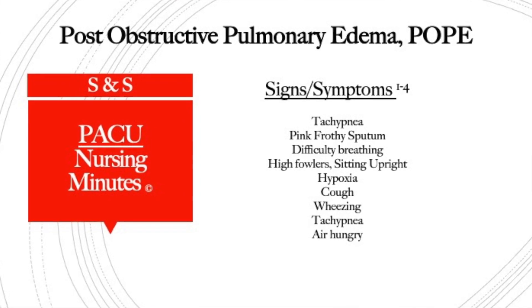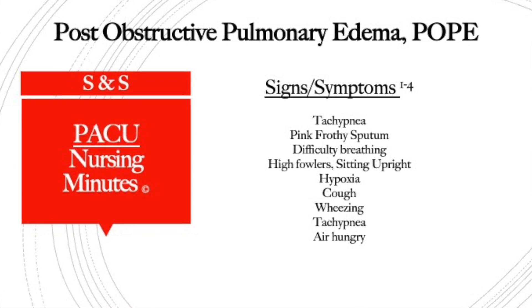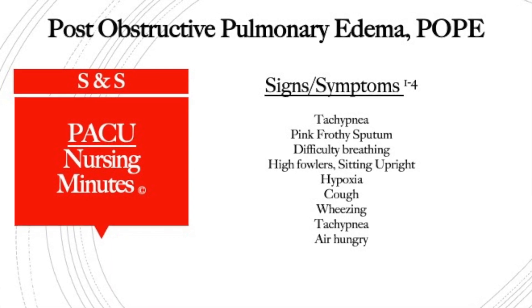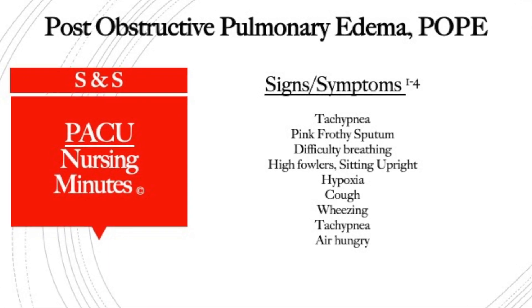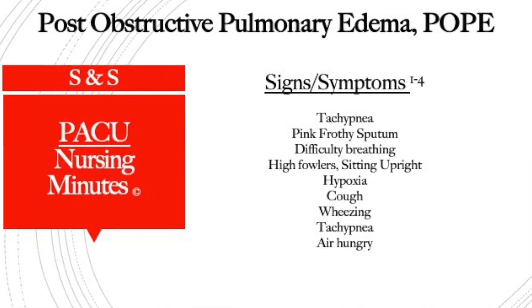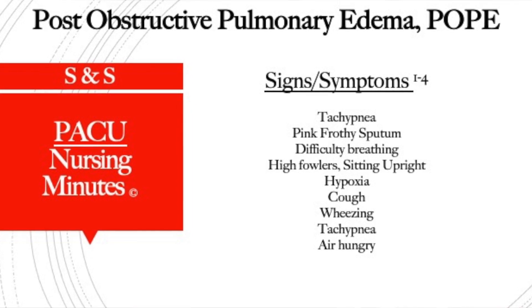So what are you going to see when they do go into post-obstructive pulmonary edema? They're going to be tachypneic, working hard for their breathing, very dyspneic, usually sitting up in high Fowler's. Kids will be tripoding. They're going to have pink frothy sputum and be hypoxic — you're going to have trouble maintaining a sat above 90. They're going to have a wet cough, wheezing, and you're going to hear rales. They're going to have air hunger.